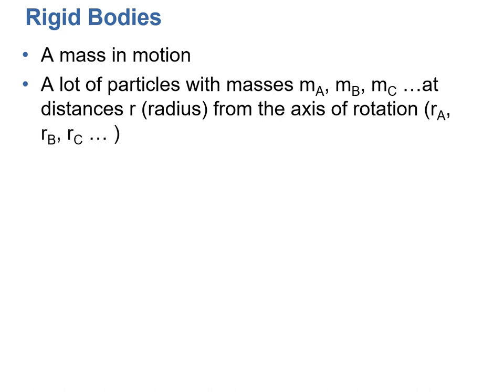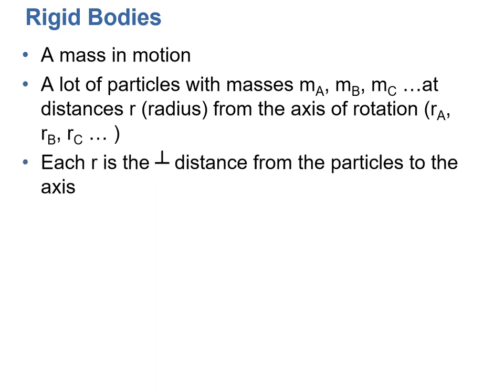Rigid bodies: a mass in motion, a lot of particles with masses m_a, m_b, m_c at distances r from the axis of rotation. Each r is the orthogonal distance from the particles to the axis. This body has kinetic energy because it is moving. If it weren't moving, we could say it has potential energy, denoted by uppercase U.